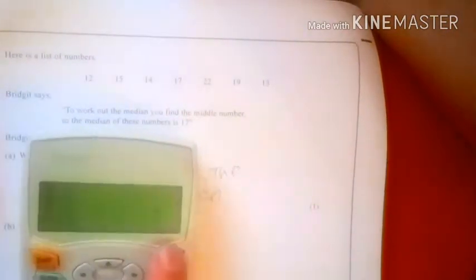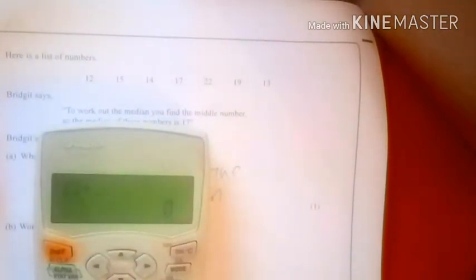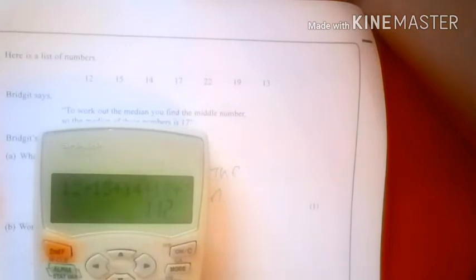Work out the mean of the numbers in the box. So the mean, I have to add them all up and then divide by the amount. I would show working out of this but I don't have space. So you add them up: 12 plus 15 plus 14 plus 17 plus 22 plus 19 plus 13. So I'm actually going to write down 112.